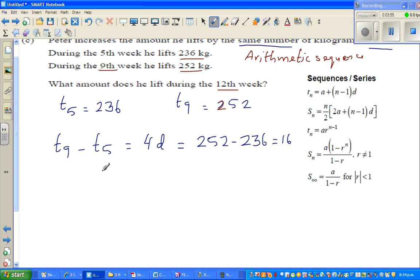Or 16 plus 236. I can say 4d is equal to 16. So 4d is equal to 16, which implies d is equal to 4. So the common difference is 4.